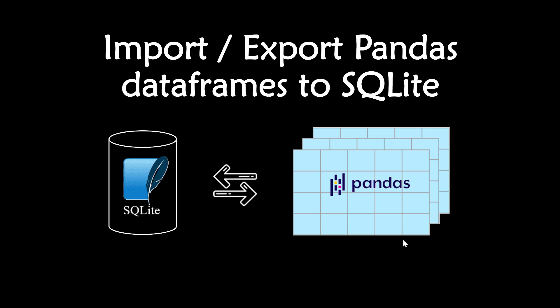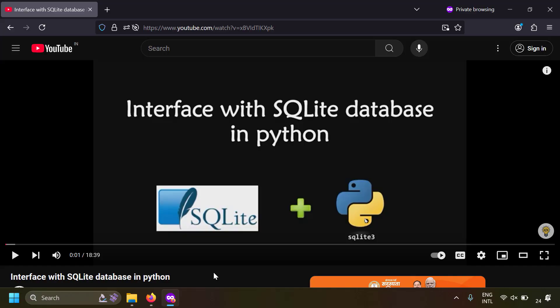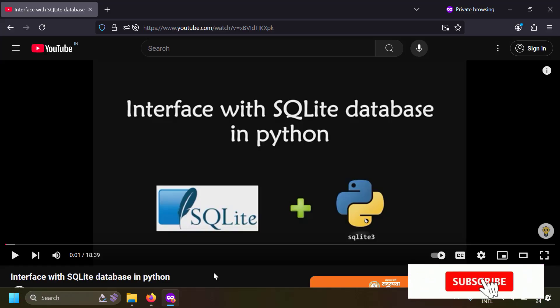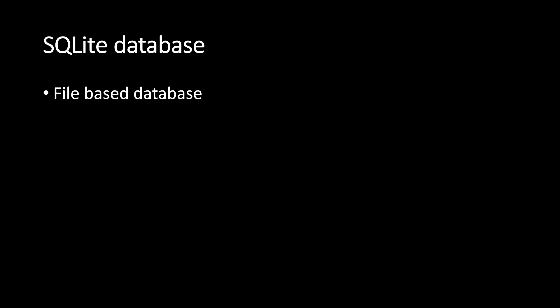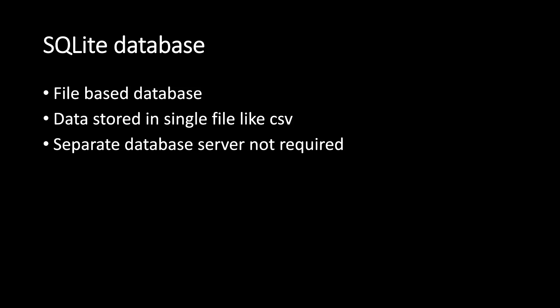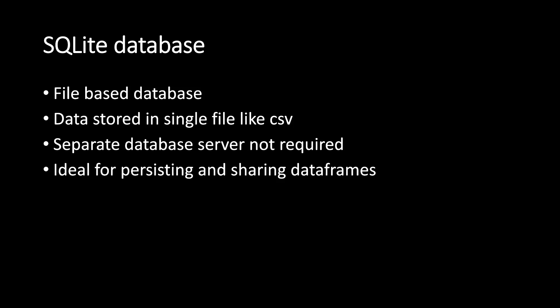Hi friends. In this video we're going to talk about how to import or export pandas DataFrames to an SQLite database. I have already made a video on how to use the Python SQLite3 module to interface with an SQLite database in Python — I will leave the link in the description. SQLite is a file-based database, meaning data is stored in a single file like a CSV or Excel file, so a separate database server is not required. Because of this, SQLite is an ideal choice for persisting and sharing DataFrames in files.